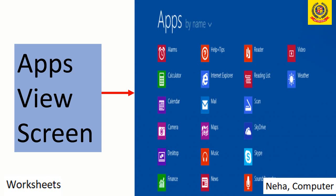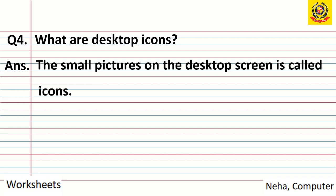Question 4: What are desktop icons? The small pictures on the desktop screen are called icons. After the start screen, we move to the desktop screen and there we find small pictures. Those pictures represent files which are in the computer system, and those small pictures are known as icons.